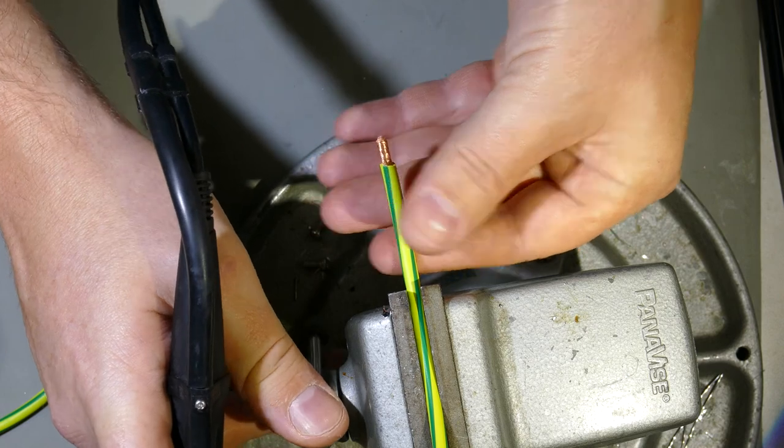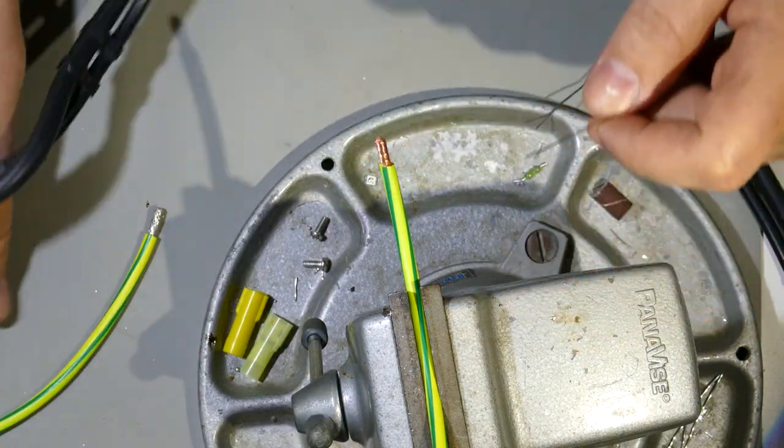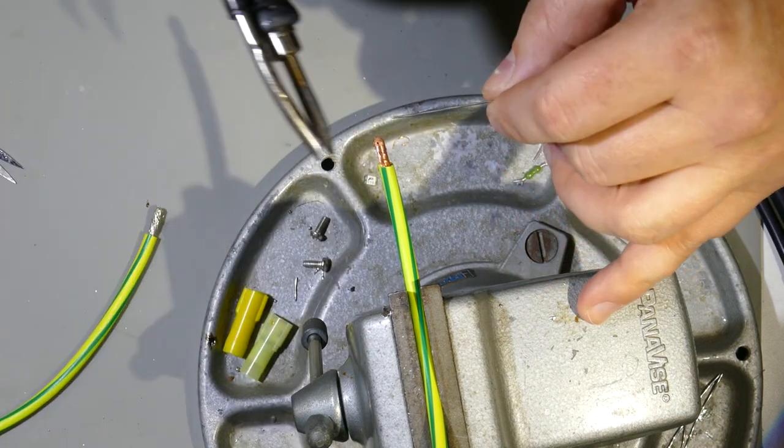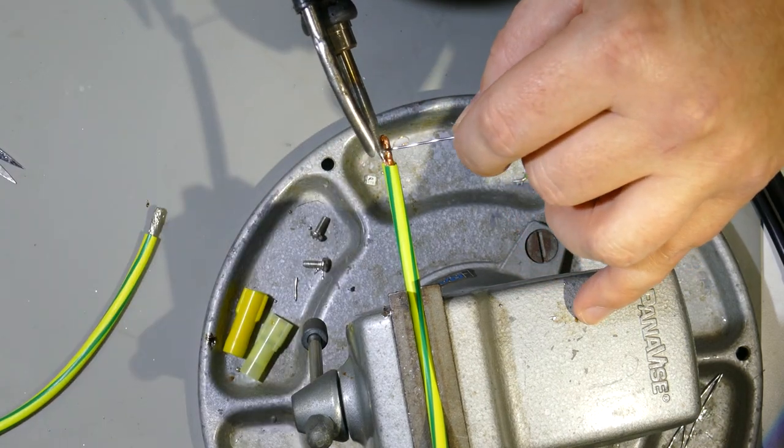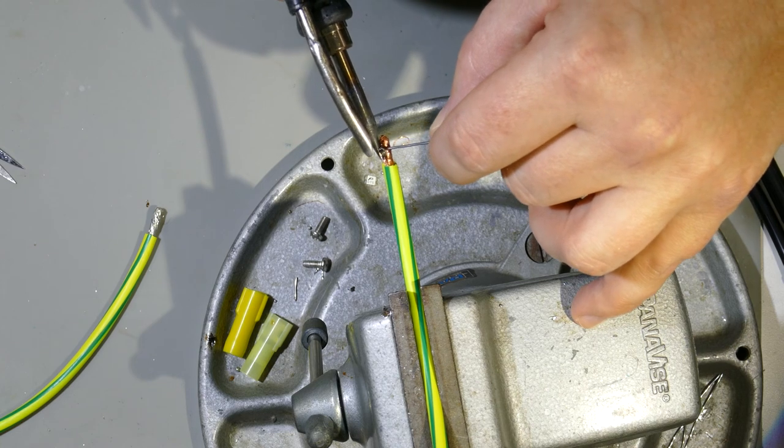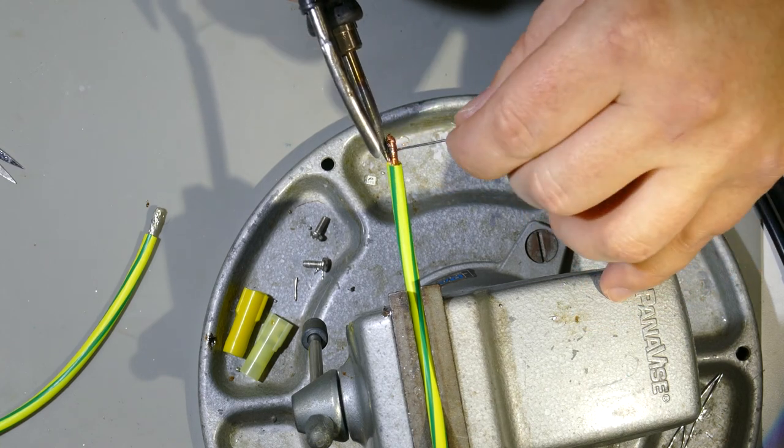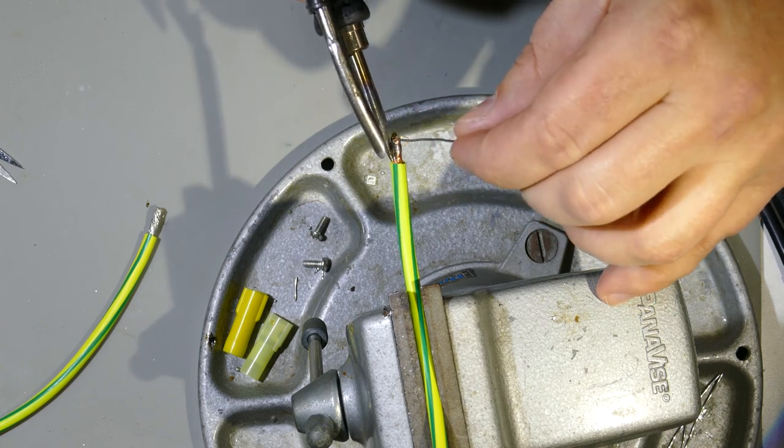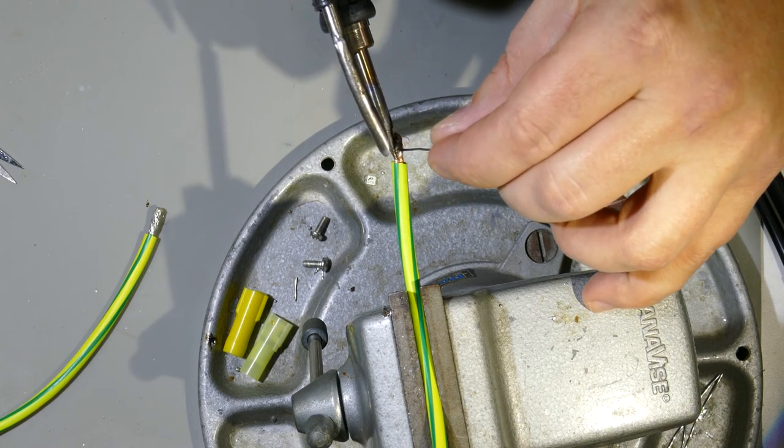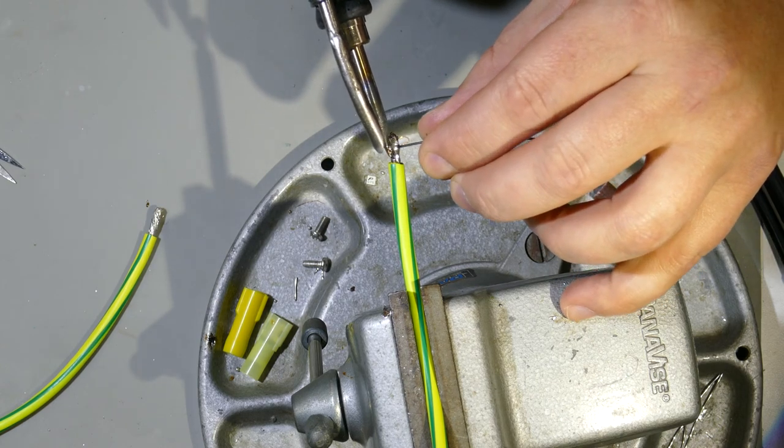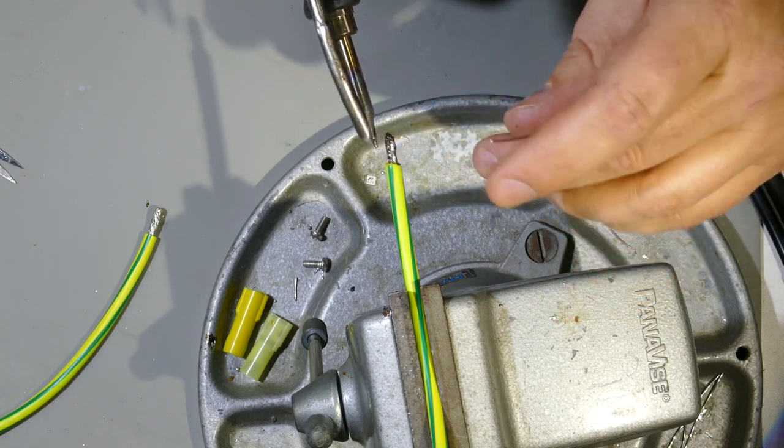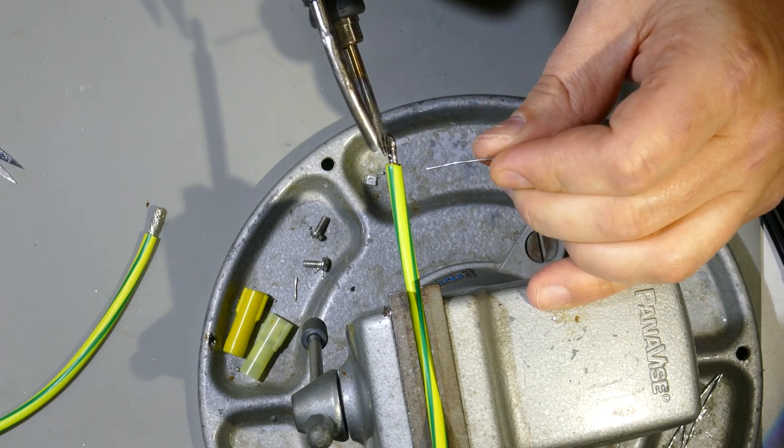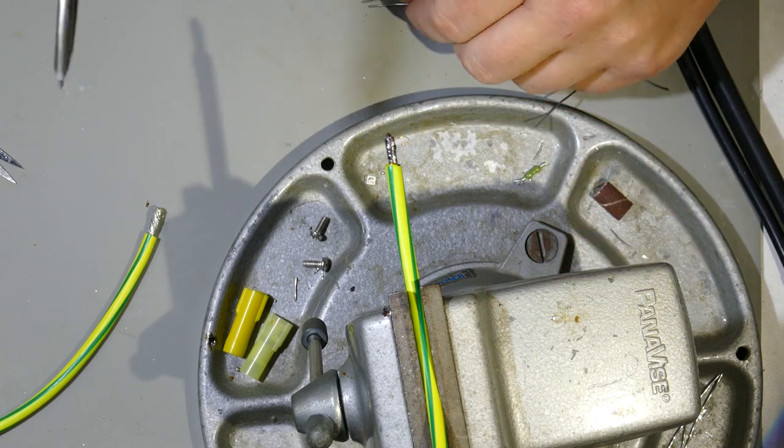Wire number two. Let's get a little bit of flux on there. Clean, clean. See a lot of guys make the mistake of pulling the soldering iron away. And then that copper cools off really quickly. Quite a bit in there. There we are.